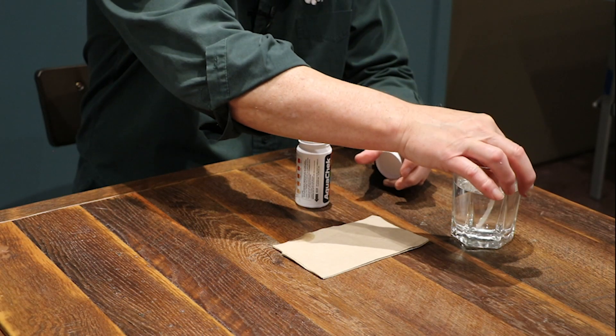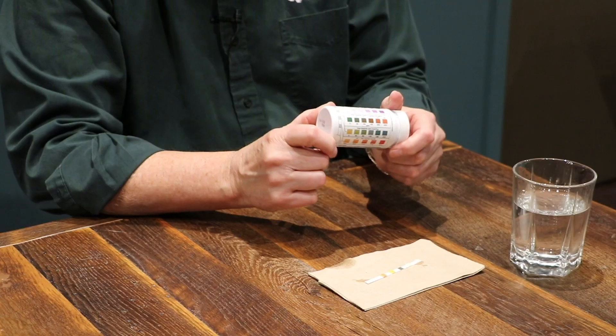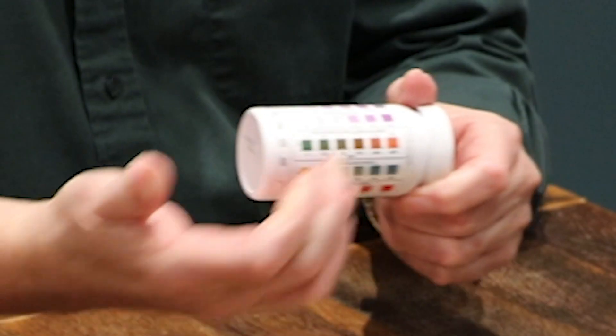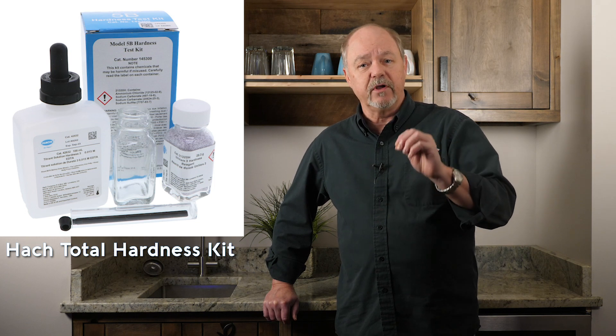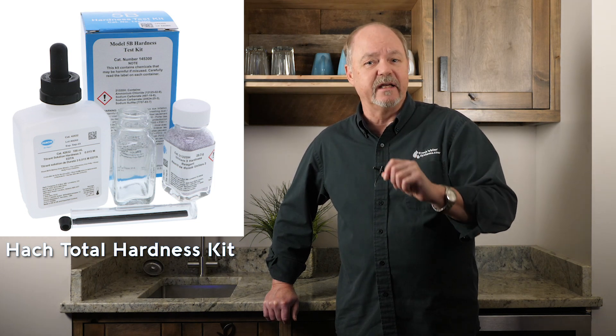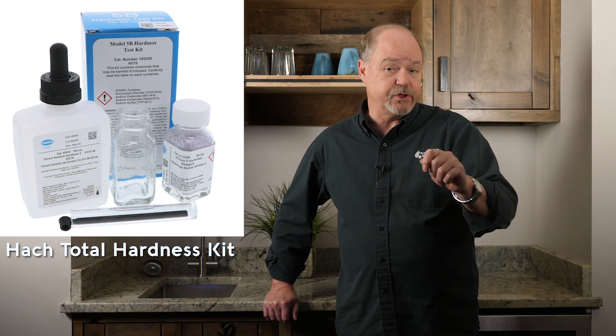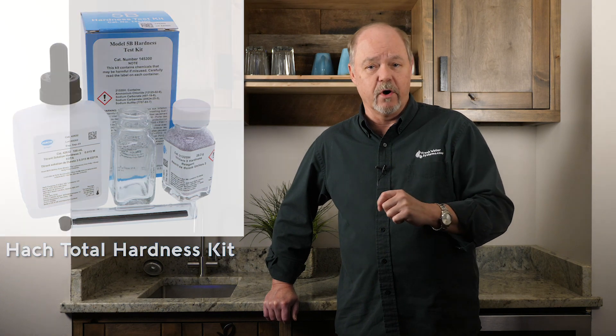Testing for hard water is relatively simple. You can either get a test strip that you dunk in the water and compare the color to the bottle it comes in, or you can do a chemical test, which is a bit more accurate. We sell them here at Freshwater Systems, and that will give you precisely how many grains per gallon of hardness you have in your water supply.